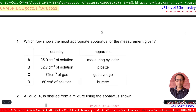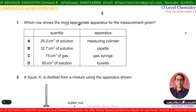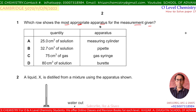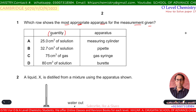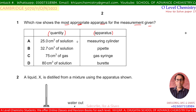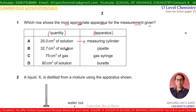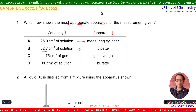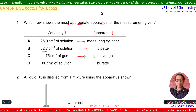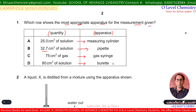Question number 1: Which row shows the most appropriate apparatus for the measurement given? There are two columns — quantity and apparatus. Options: 25 cm³ of solution measured by measuring cylinder; 32.7 cm³ of solution with pipette; 75 cm³ of gas with gas syringe; 80 cm³ of solution with pipette.